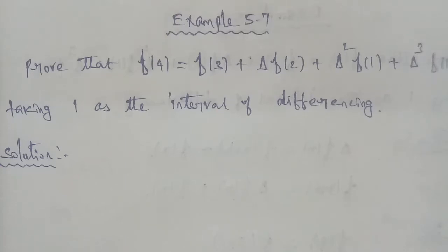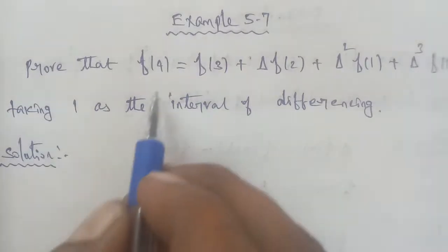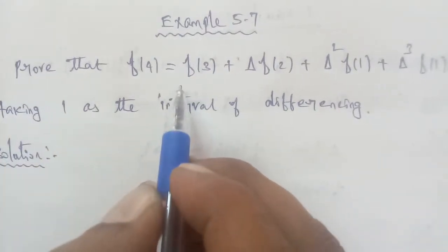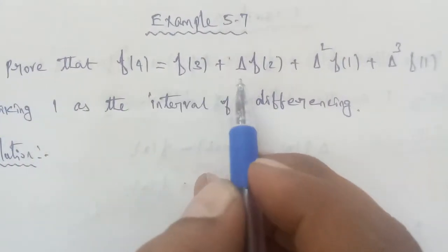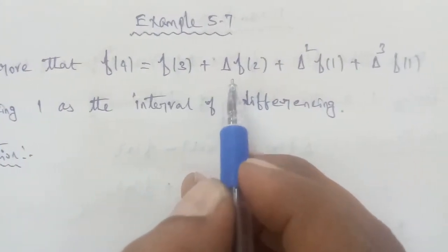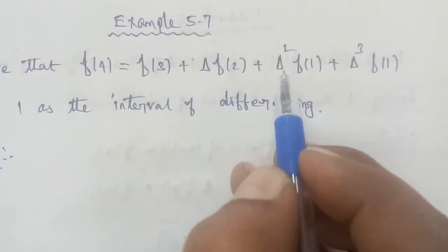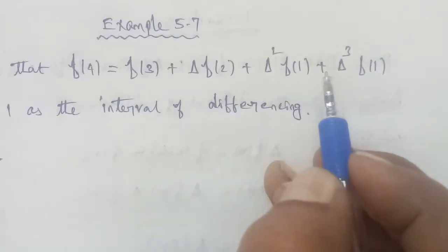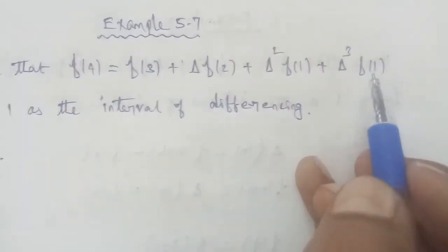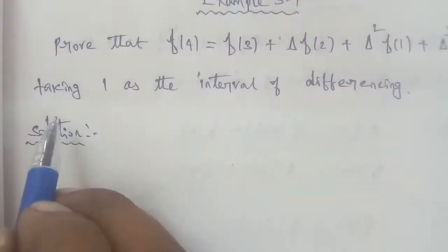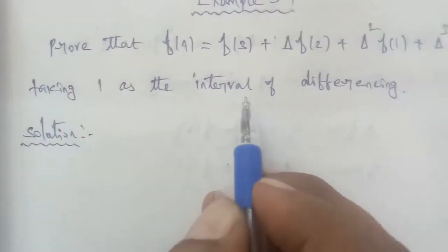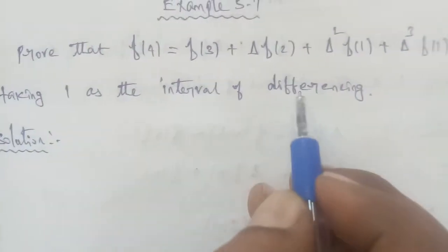Hi students, I am Opinath. 12th business mathematics, Example 5.7: Prove that f(4) is equal to f(3) plus Δf(2) plus Δ²f(1) plus Δ³f(1), taking 1 as the interval of differentiation.